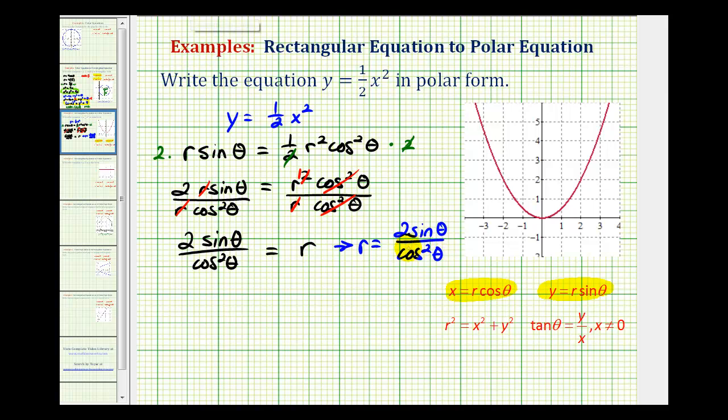But if we wanted to, we could also write this as r equals two times sine theta over cosine theta, times one over cosine theta. Notice how the denominator still contains two factors of cosine theta, and the numerator contains one factor of sine theta, and then also a factor of two. Now one reason we might want to do this is we can now write this as a product of trig functions.